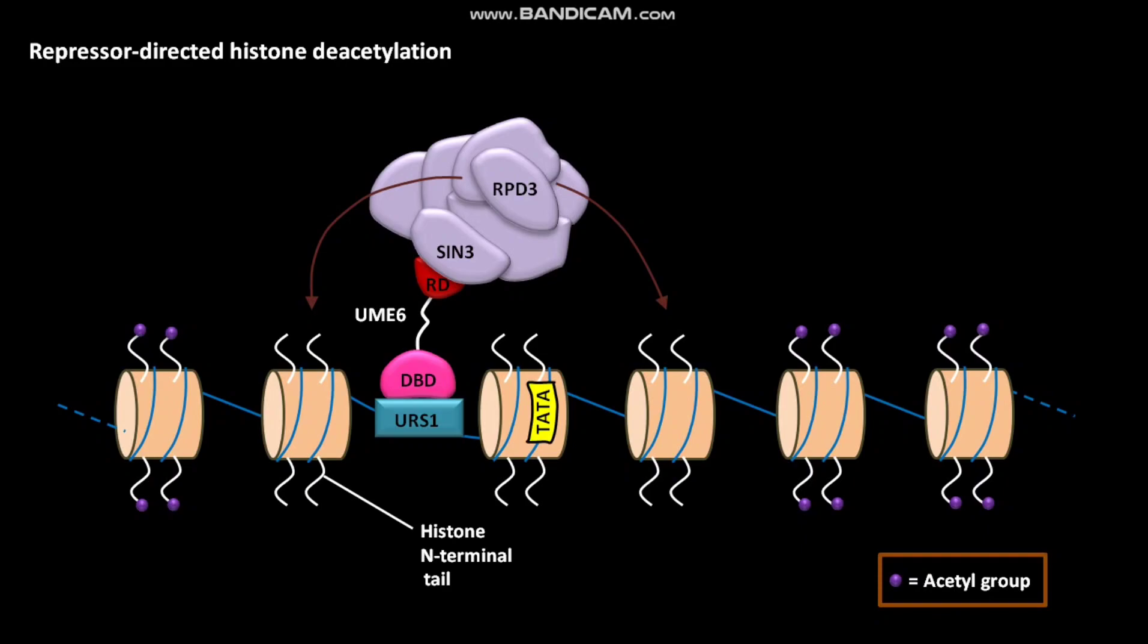This deacetylation occurs in the region of the UME6 binding site. This deacetylation inhibits the binding of general transcription factors at the TATA box. This inhibition represses gene expression.